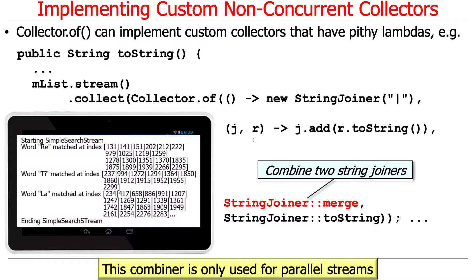The next parameter passed to `Collector.of` is the combiner, which is only used for parallel streams, but it needs to be present in case someone uses a parallel stream. The combiner is called `merge`, and it takes two `StringJoiner` objects and merges them together. `merge` is a method that's part of the `StringJoiner` class and serves as the combiner to merge the two partial results.